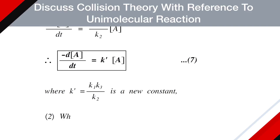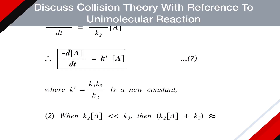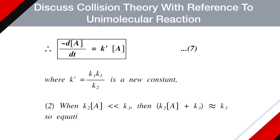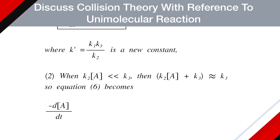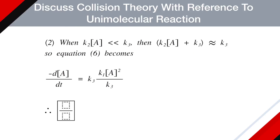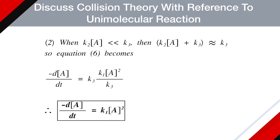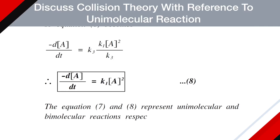The second case is when K2[A] is very small compared to K3. In that case, K2[A] + K3 ≈ K3. Equation 6 becomes: -d[A]/dt = K3 · K1[A]² / K3, and K3 cancels, giving -d[A]/dt = K1[A]² (equation 8). Equations 7 and 8 represent unimolecular and bimolecular reactions respectively.